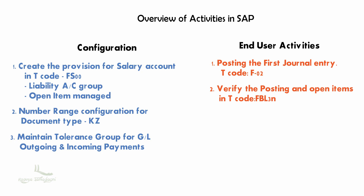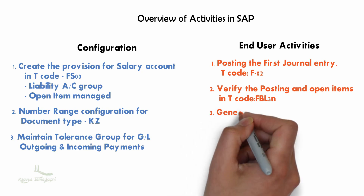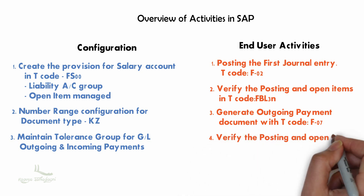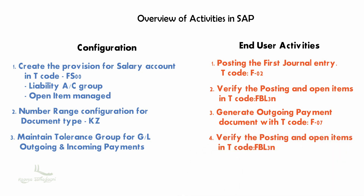After verifying it as open, we will post the outgoing payment document using T-code F-07. This will create the second journal entry: provisions for salary account debit to bank account. Then again we will check in the FBL3N report to confirm that the provisions for salary account has been cleared. Let's perform these steps one by one in the next video.